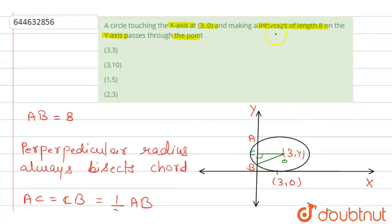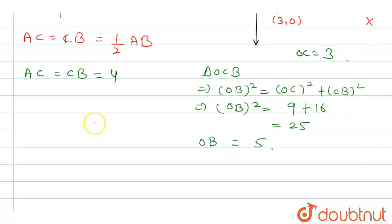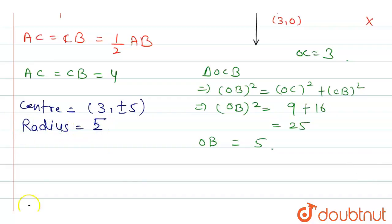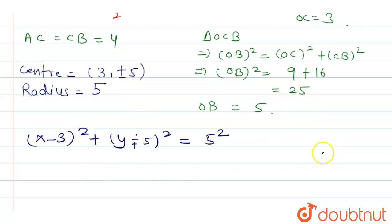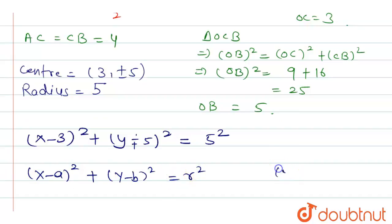Since it is not given that the circle is in a specific quadrant, the circle can also be in the fourth quadrant. So the center of the circle is (3, ±5) and the radius equals 5. The equation of the circle is (x − 3)² + (y ∓ 5)² = 25, where (a, b) is the center and r is the radius.